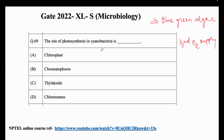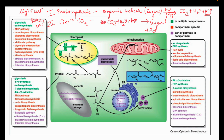In general, we will first begin with simple photosynthesis. In plants there are different organelles - we have chloroplast, mitochondria, peroxisomes, nucleus, and vacuoles for various storage molecules, and then we have cytoplasm. Glycolysis, amino acid biosynthesis, and different alkaloid biosynthesis pathways occur majorly in the chloroplast.